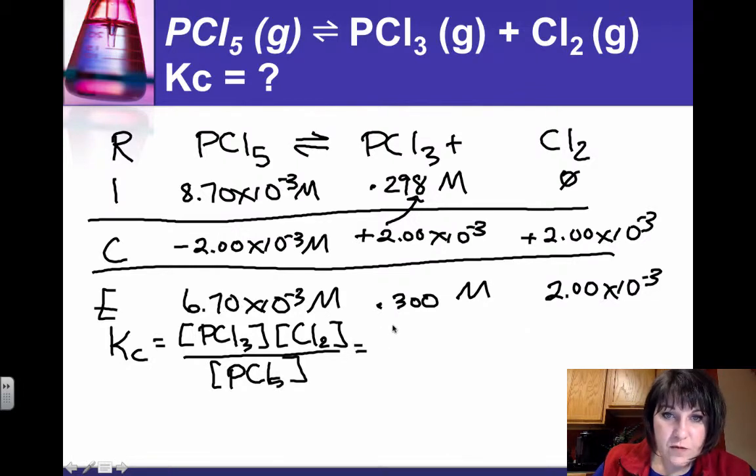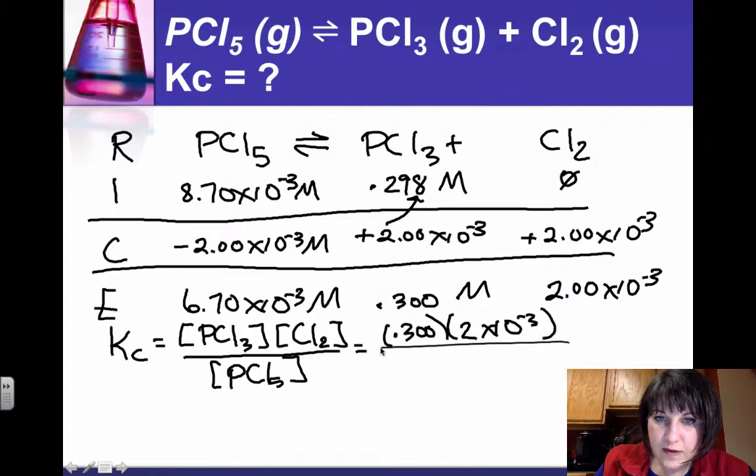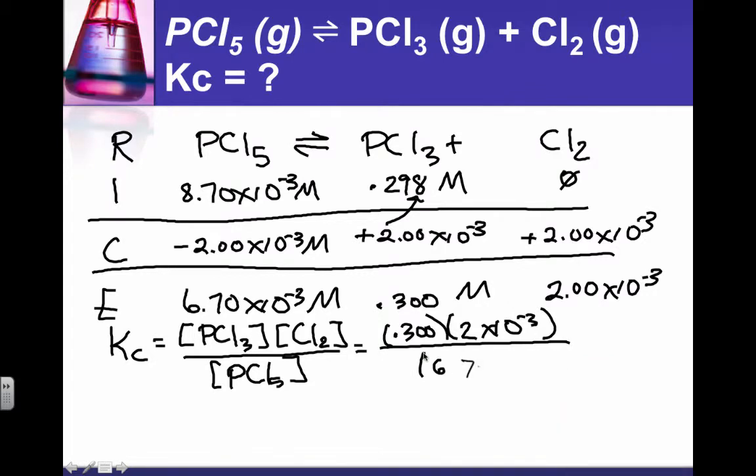And I can put the equilibrium values in, 0.300 times 2 times 10 to the minus 3, divided by 6.7 times 10 to the minus 3 molar, and let's use our calculator.